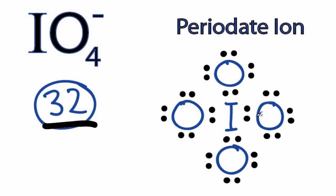At this point you can see that each of the oxygens has 8 valence electrons, and the iodine in the center also has 8. So the octets are fulfilled on each of the atoms, and we've used the 32 valence electrons. So this seems like a pretty good Lewis structure for the IO4- ion.